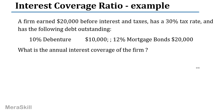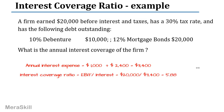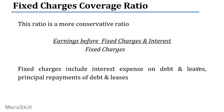A firm earned $20,000 before interest and tax, with a 30% tax rate, and has the following debt outstanding: 10% debentures of $10,000 and 12% mortgage bonds of $20,000. What is the annual interest coverage ratio? Interest expense: 10% of $10,000 = $1,000; 12% of $20,000 = $2,400; total $3,400. EBIT of $20,000 divided by $3,400 gives an interest coverage ratio of nearly six times.